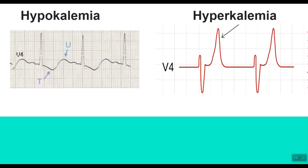Now we're looking at two more very important ECGs, not only for the exams but also for real-life medicine. The ECG on the right represents hypokalemia, which can be caused by chronic kidney disease, excessive use of laxatives, insulin overdose, or drugs like amphotericin B. The ECG in hypokalemia is characterized by flattening of the T-wave, as you can see here, and the presence of an unusual wave right after the T-wave, known as the U-wave.